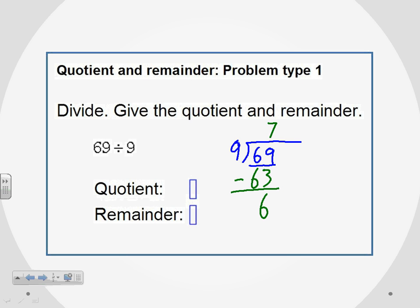First, the quotient is the number of times that 9 went into 69 evenly. 9 went into 69 seven times, so that is our quotient.